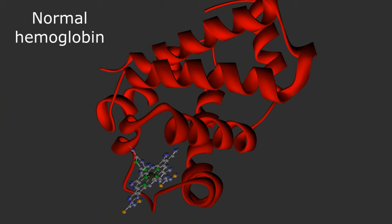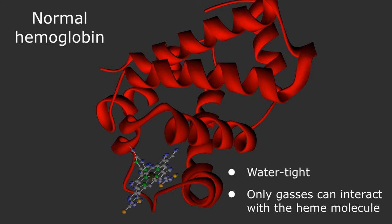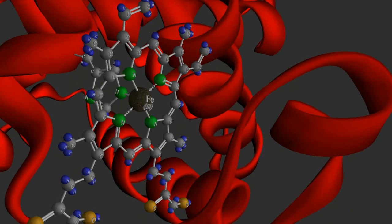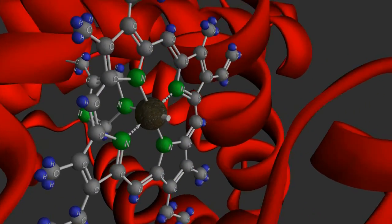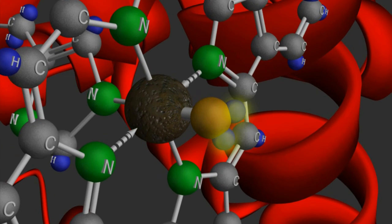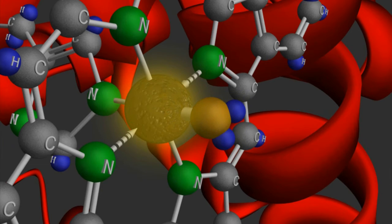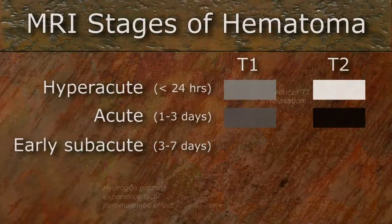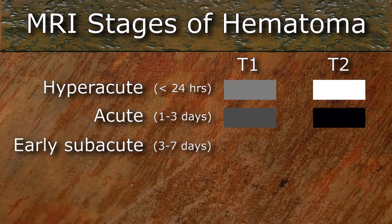The normal hemoglobin is watertight, only allowing gases like oxygen and carbon monoxide to interact with the heme molecule. With this conformational change, water now enters the center of the globin protein, and the oxygen atom on the water molecule can form temporary dative bonds with the paramagnetic ferric cation, producing aquamethemoglobin. With the water's hydrogen protons now in the vicinity of the ferric ion, they experience the local paramagnetic effect, reducing their T1 relaxation and increasing the signal of the hematoma on a T1-weighted image, which now becomes bright.